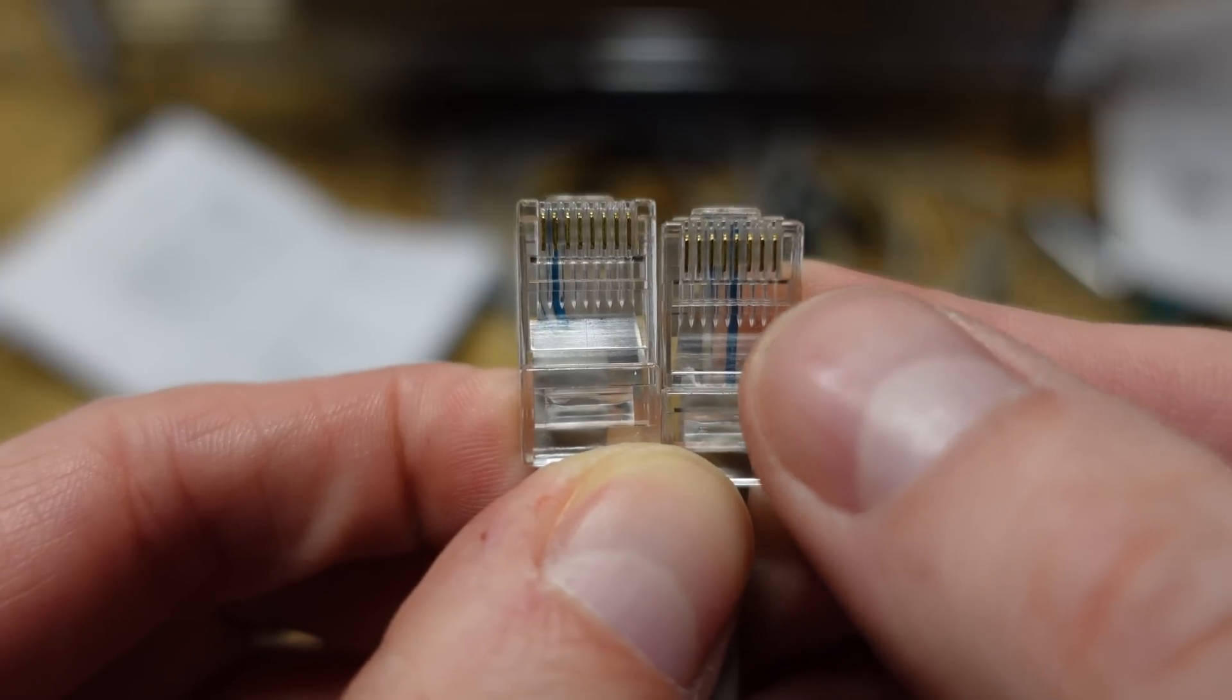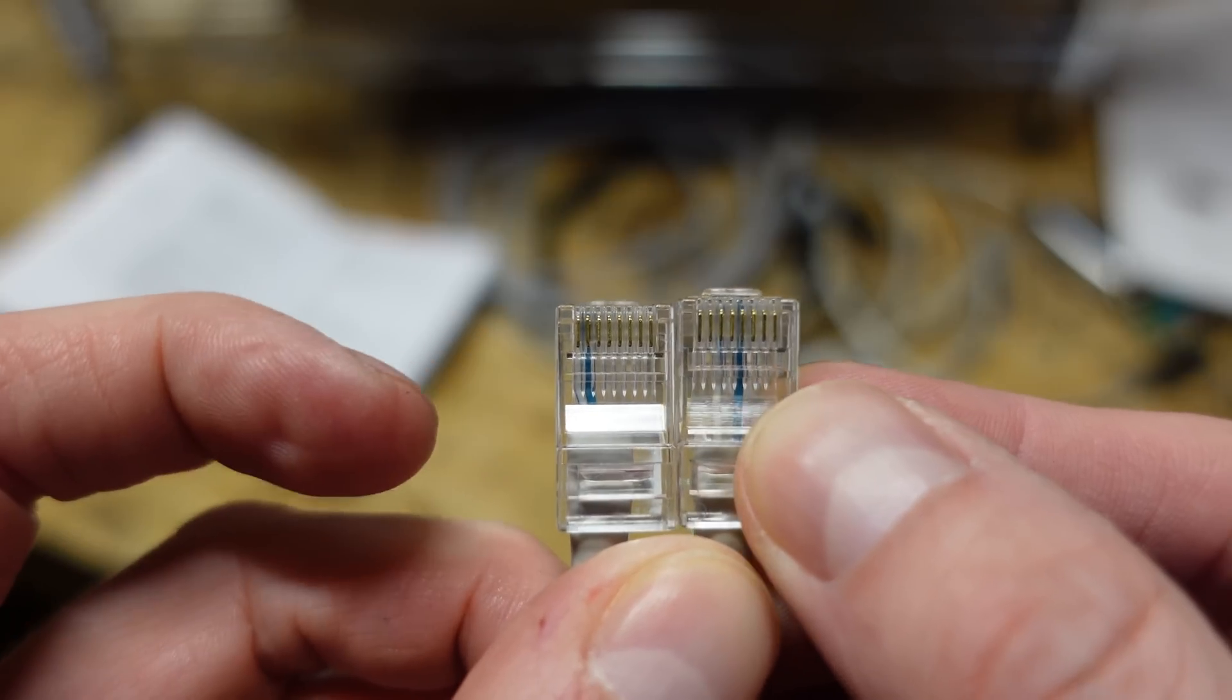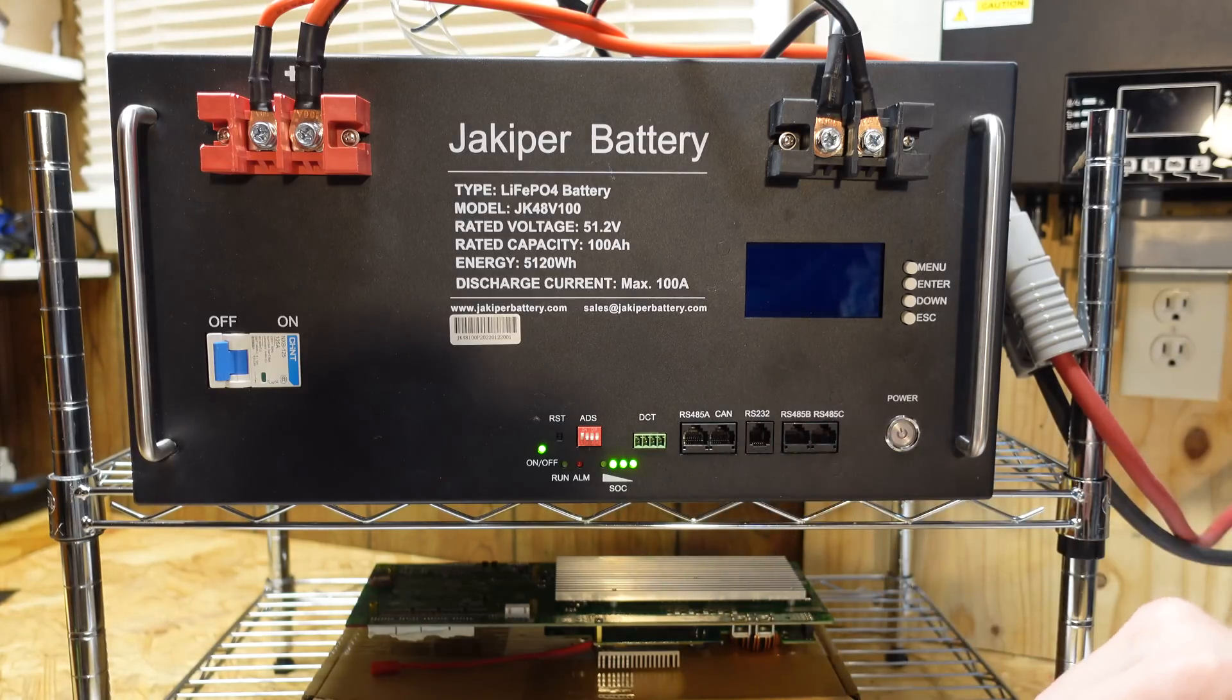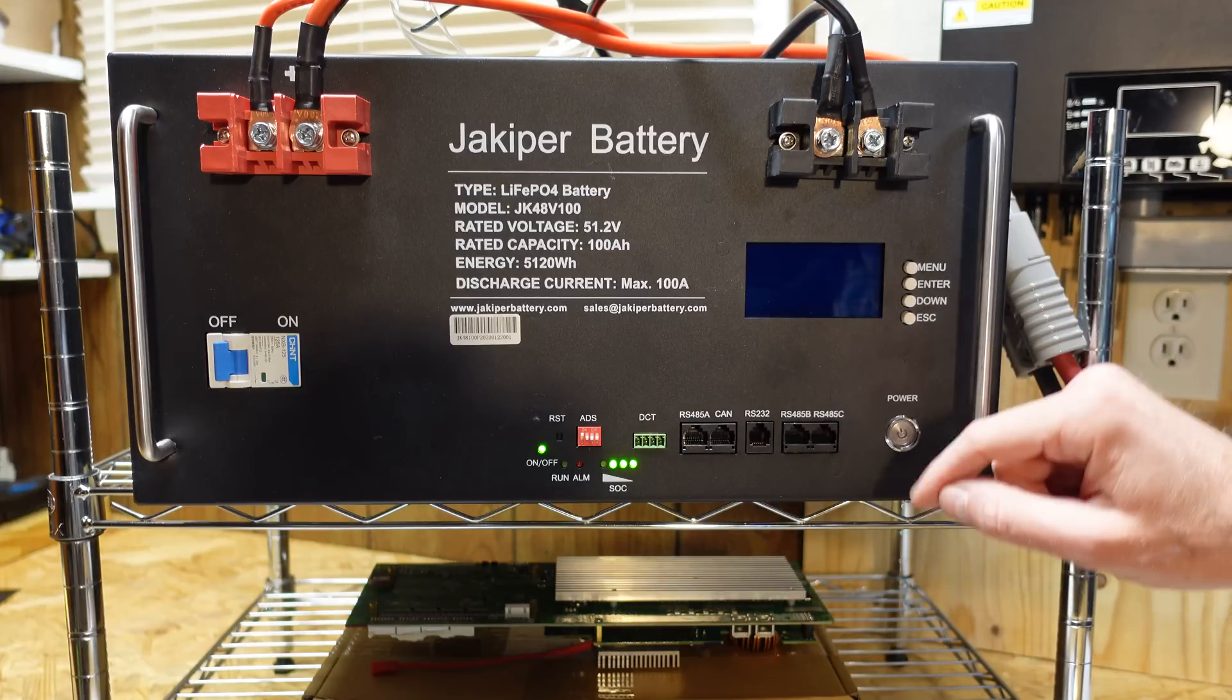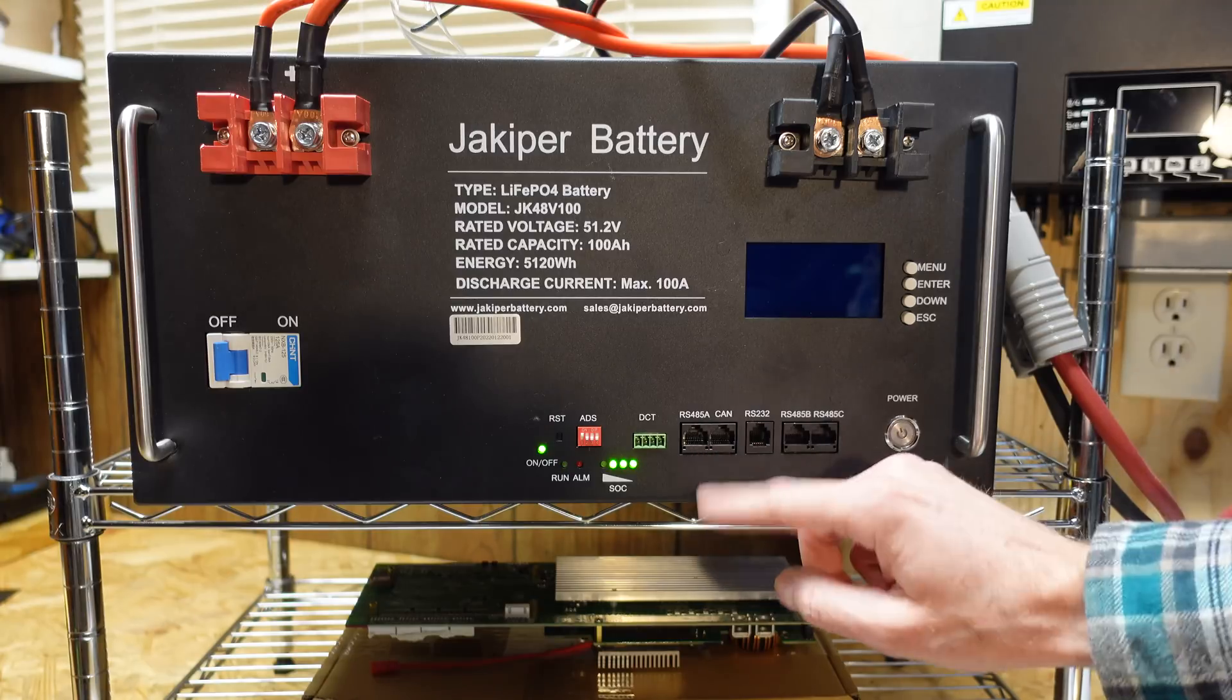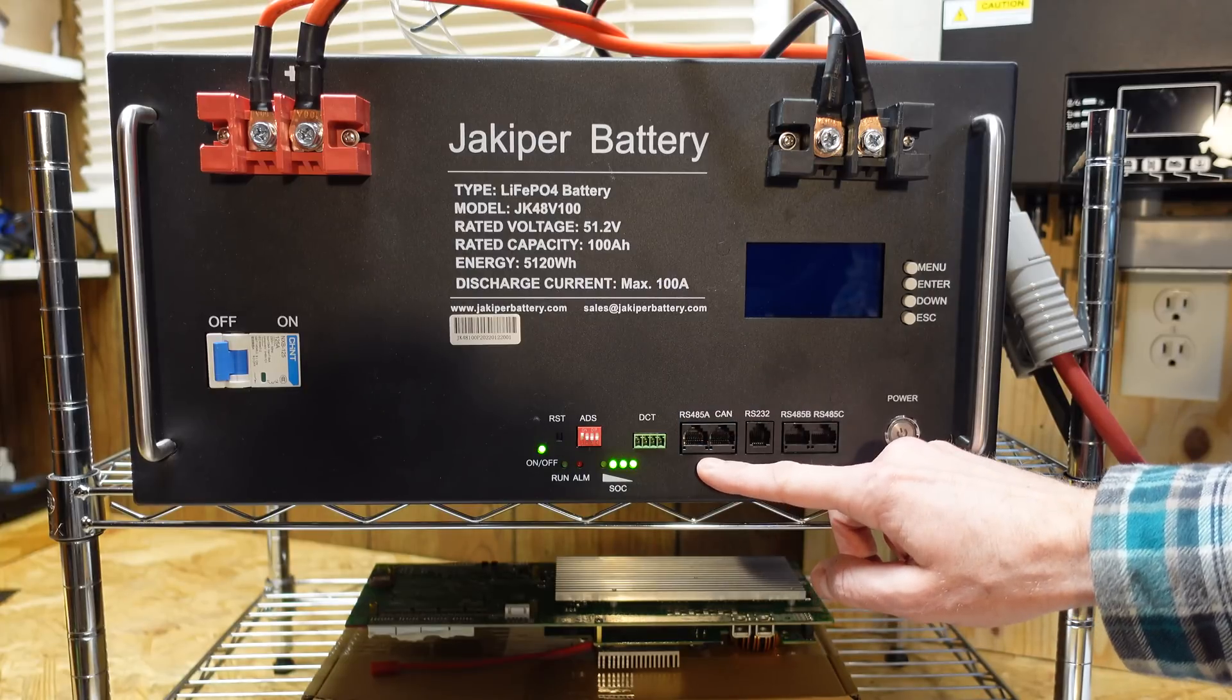So, on this cable, the right side goes in the inverter, the left side goes in the battery. We can see I've got pin number three or blue stripe going to pin number one, and we can see I've got pin number five or solid blue going to pin number two. Now, this battery does have three ports labeled RS-485. Ports B and C are for communications from battery to battery, and these two ports are simply cross-through ports on the inside of the battery, so it doesn't matter if you use B or C. The port labeled RS-485A is using a completely separate protocol, and it appears to me to be a separate bit rate. This port is supposed to be 9,600 baud rate.